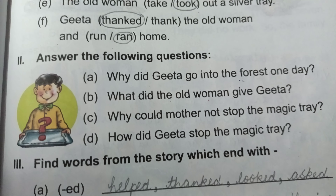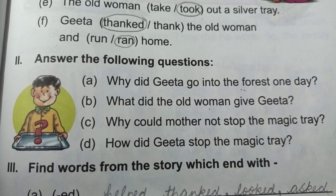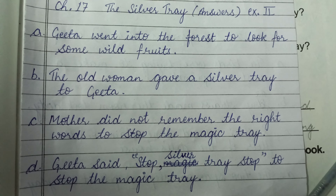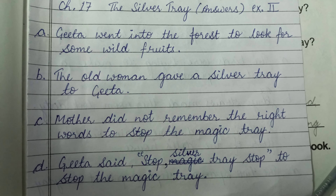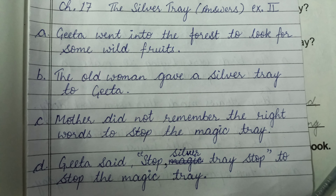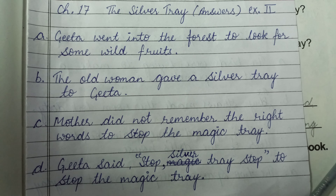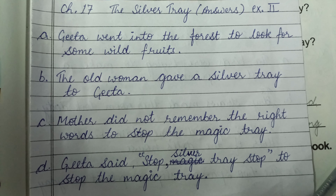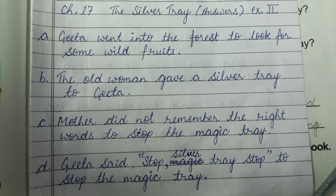Now come on to Exercise 2. These are the questions — we will write answers. Please read your questions carefully. Answer A: Geetha went into the forest to look for some wild fruits. Answer B: The old woman gave a silver tray to Geetha. Answer C: Mother did not remember the right words to stop the magic tray. Answer D: Geetha said 'Stop, silver tray, stop' to stop the magic tray.